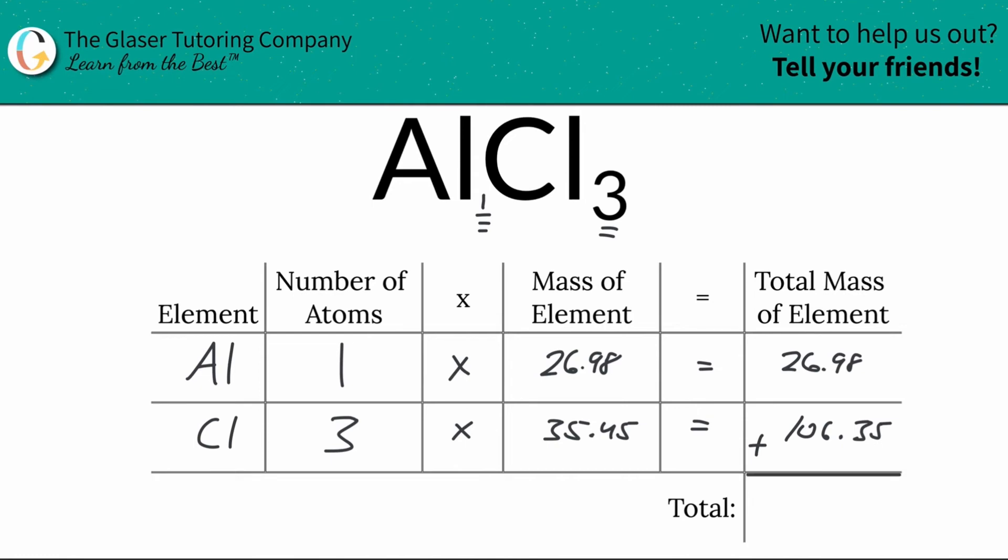What we're going to do is take those masses, add them together, and then we're going to find the total mass of the entire compound. So here we're going to add those two together and it comes out to be about 133.33. And since we're solving for molecular mass the units here are in AMU. It's as simple as that.